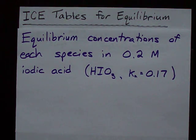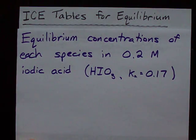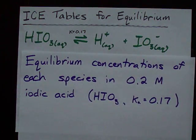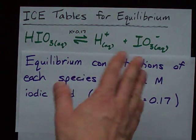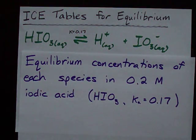Hey guys, question from a reader. How do you use ICE tables to figure out the equilibrium concentrations in a mixture? For example, when you put iodic acid into water, how can you tell how much iodic acid, H+, and iodate ion there is once the system has reached equilibrium?